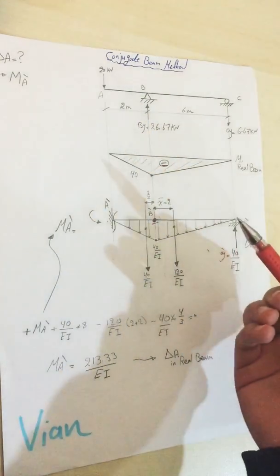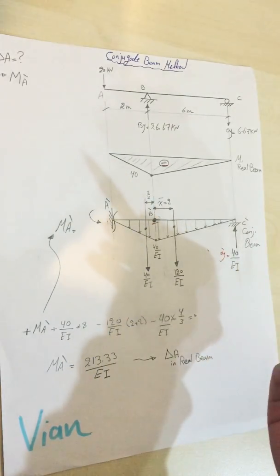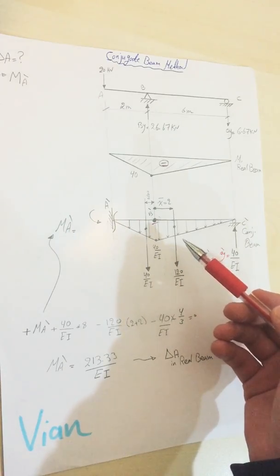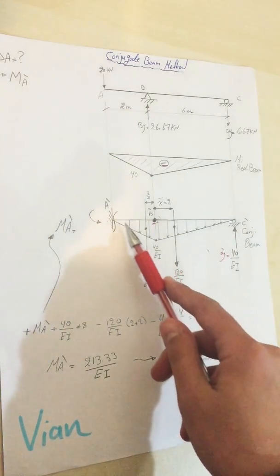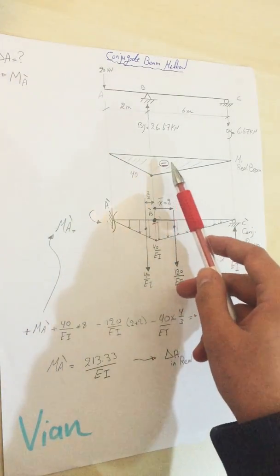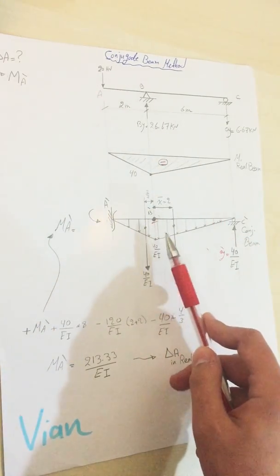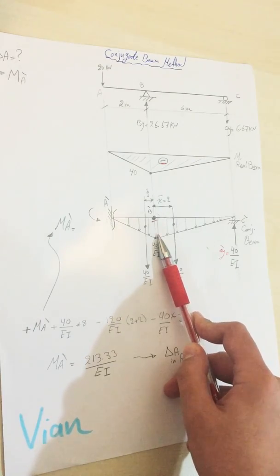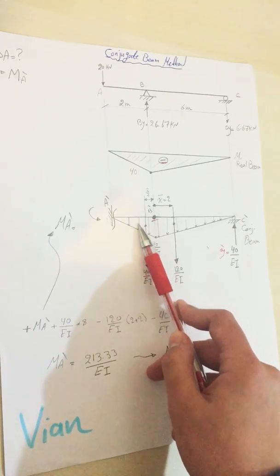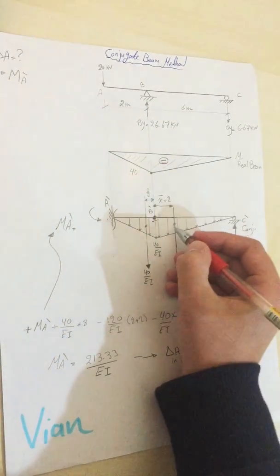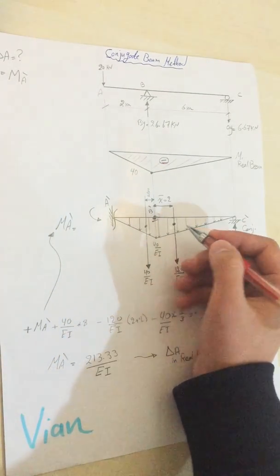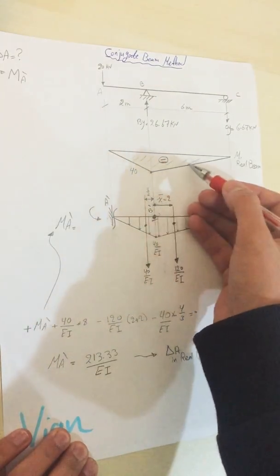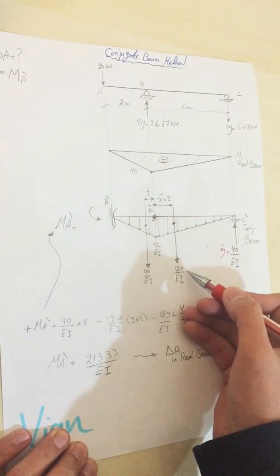As I explained in my previous video, this moment diagram will be a distributed moment or distributed load on the conjugate beam. Because it's a negative sign, it will be acting downward. I just transferred this graph onto the conjugate beam with the distributed load acting downward. Then I determine the resultant force for these two triangles, because as you can see there are two triangles.